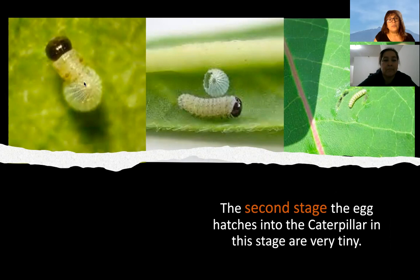This is the second stage. The egg hatches into the caterpillar. During this stage, the caterpillars are very tiny. After they grow inside the egg, this is the new caterpillar — this is the baby. And look here, now she is going out.